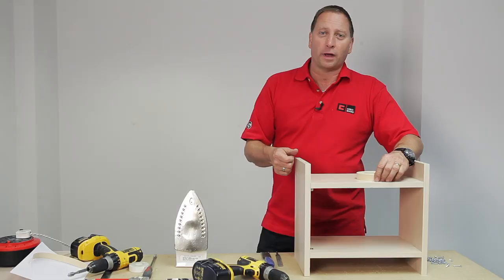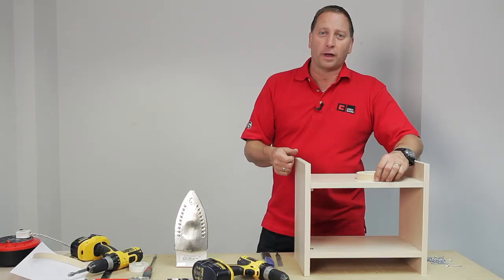In this film, I'm going to show you how to use iron-on edging. The edging is used to hide the raw chipboard when you've cut a panel.